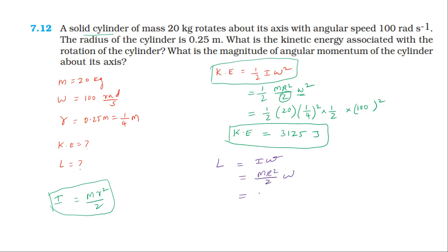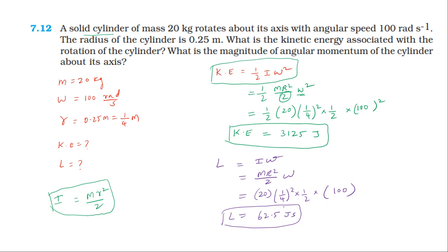Substituting: mass 20, radius 1 by 4, so 1 by 4 squared, into 1 by 2, into omega 100. So the angular momentum is 62.5 joule-seconds, which is the final answer.